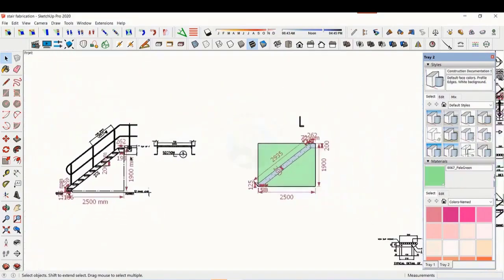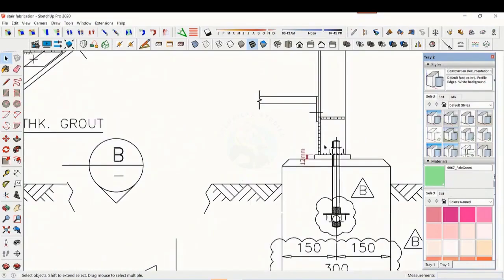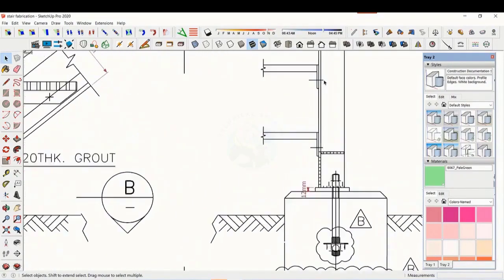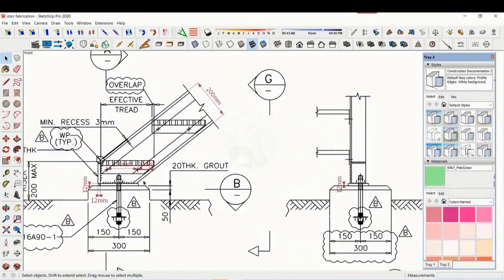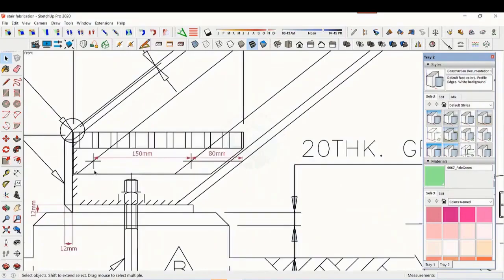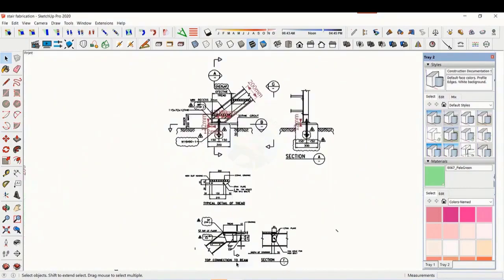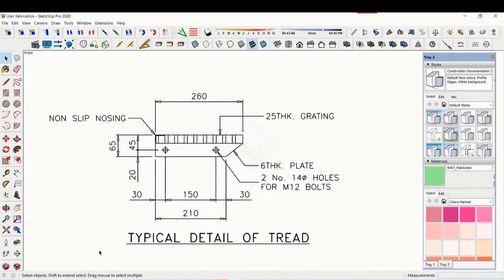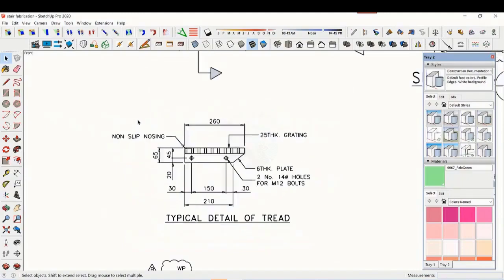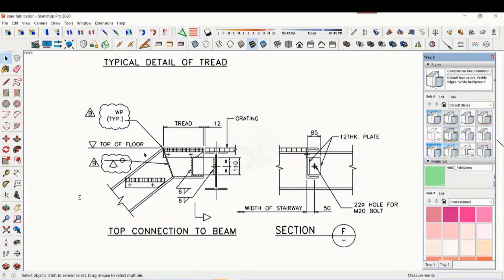Let us see some other details. This is the base plate and base end plate. See the details of the thread. The distance and pitch of the holes are very important. See the details of the top end. Study how the stair and the platform beam are connected.